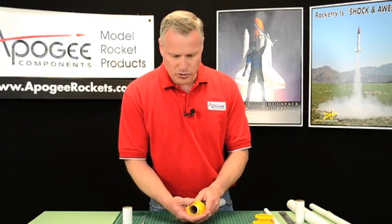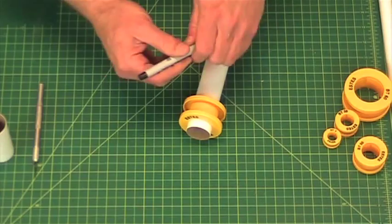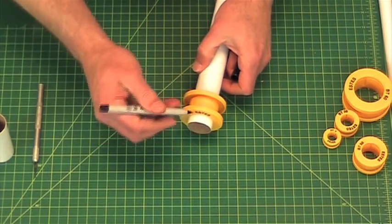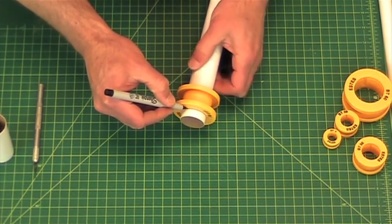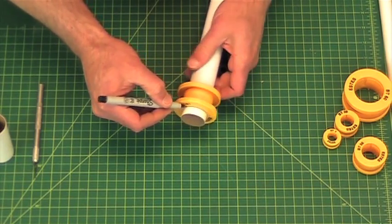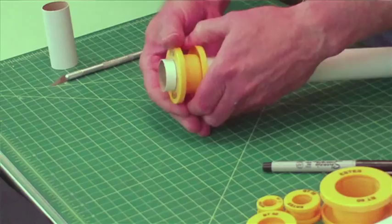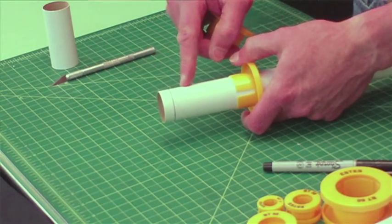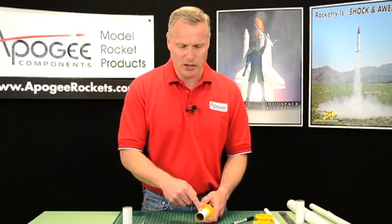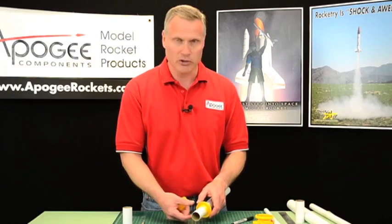They are also cool for drawing lines around the perimeter of a tube. You can measure the position and then just run your pen or pencil. I always use pencil, I'm just using pen here just so that you can see it in the video. The ink will bleed through paint when you go to paint the rocket so you always use a pencil for marking tubes, but I just wanted to show you how a pen would look.